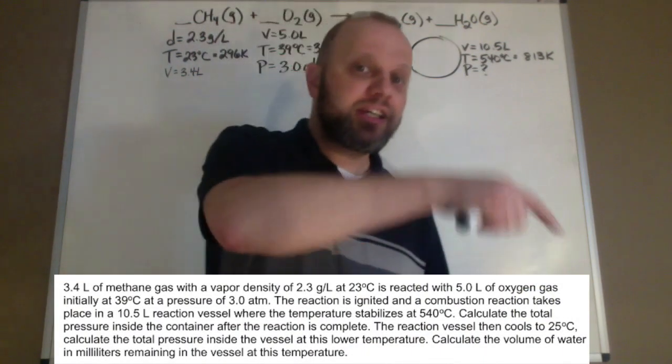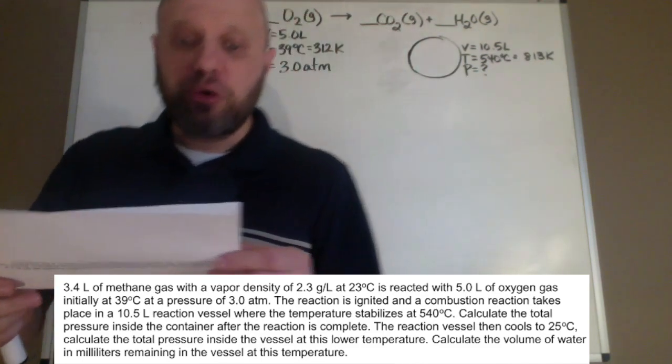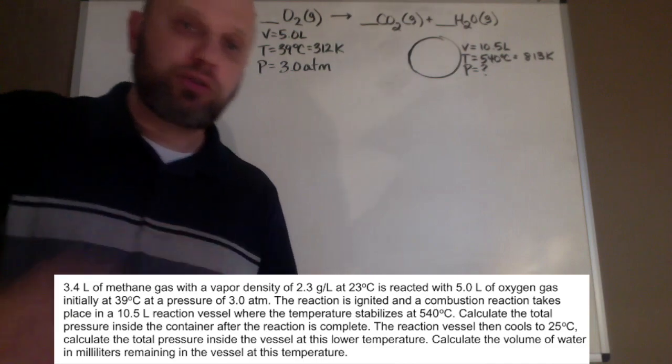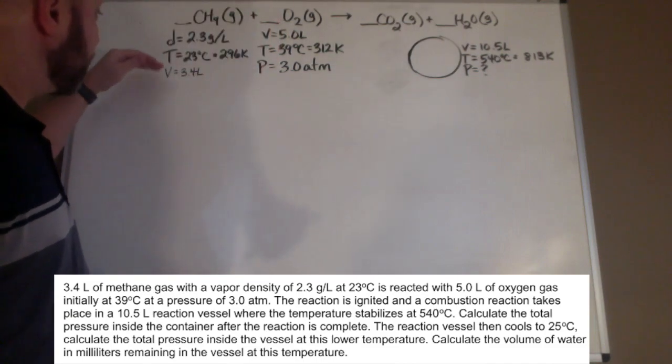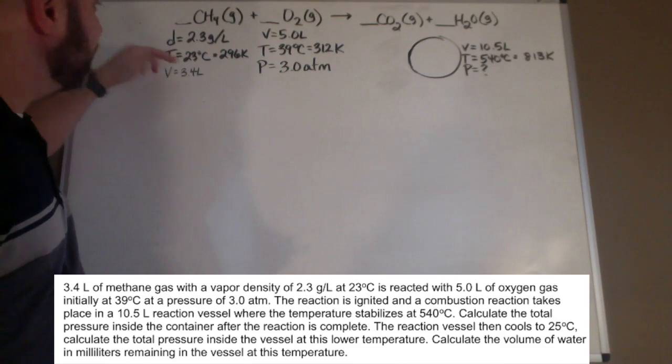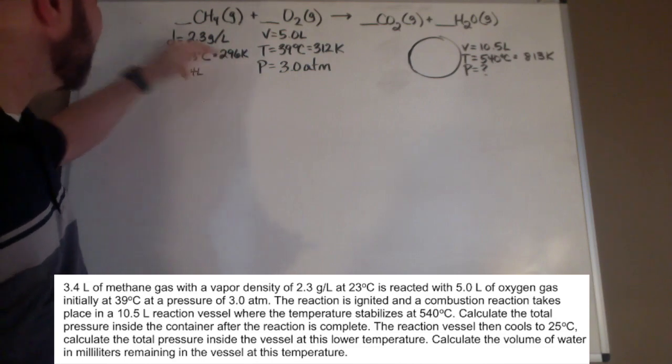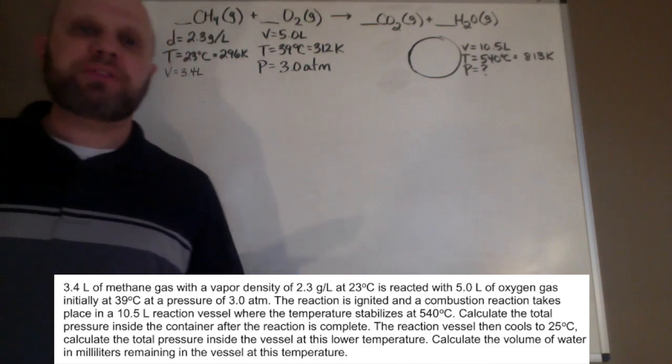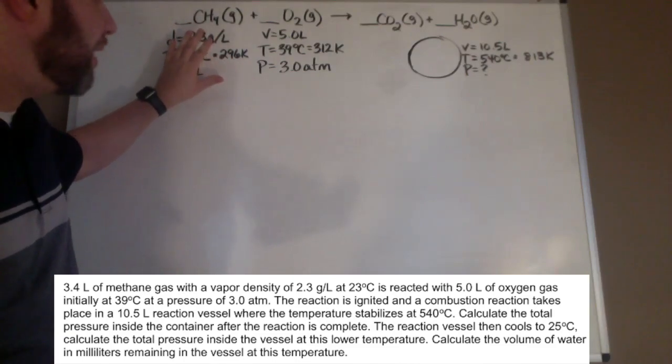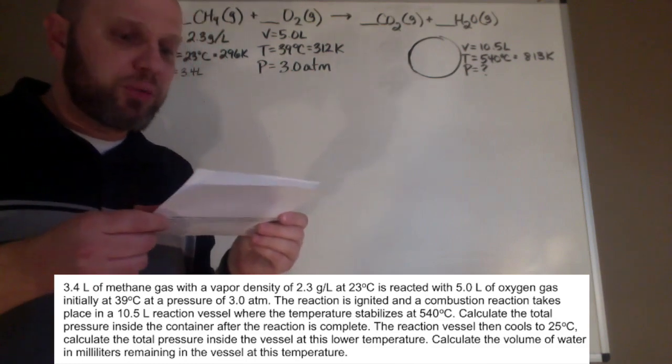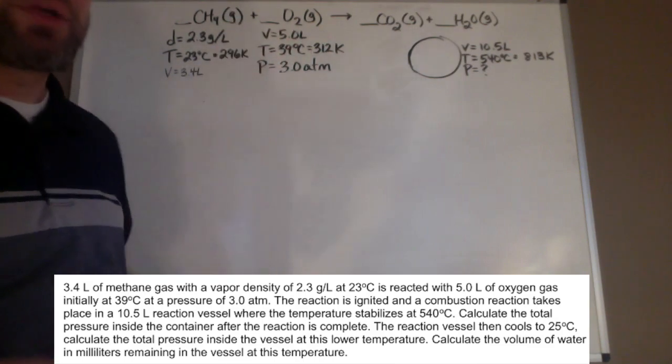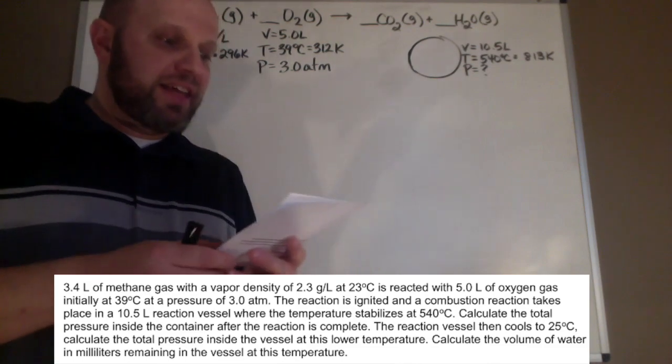It says 3.4 liters of methane, CH4, with a vapor density of 2.3 grams per liter at 23 degrees Celsius. So you have 3.4 liters of methane at a temperature of 23 degrees Celsius, which we convert to 296 K, and a vapor density, which is just a fancy way of saying the density of a gas, of 2.3 grams per liter. It's reacted with 5.0 liters of oxygen at 39°C, which is 312 K, at a pressure of 3.0 atm.